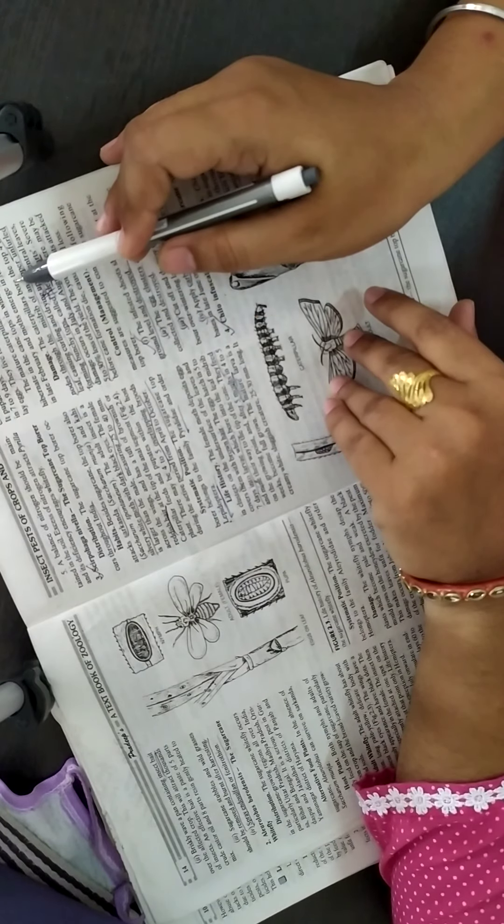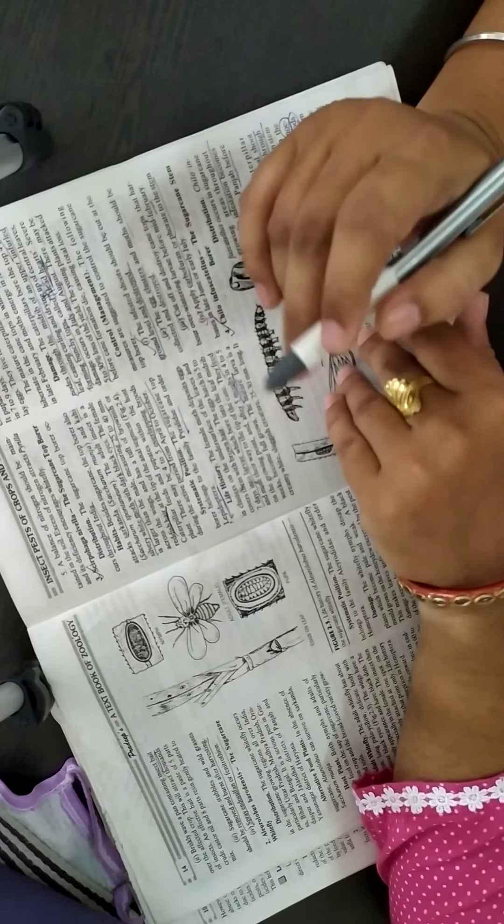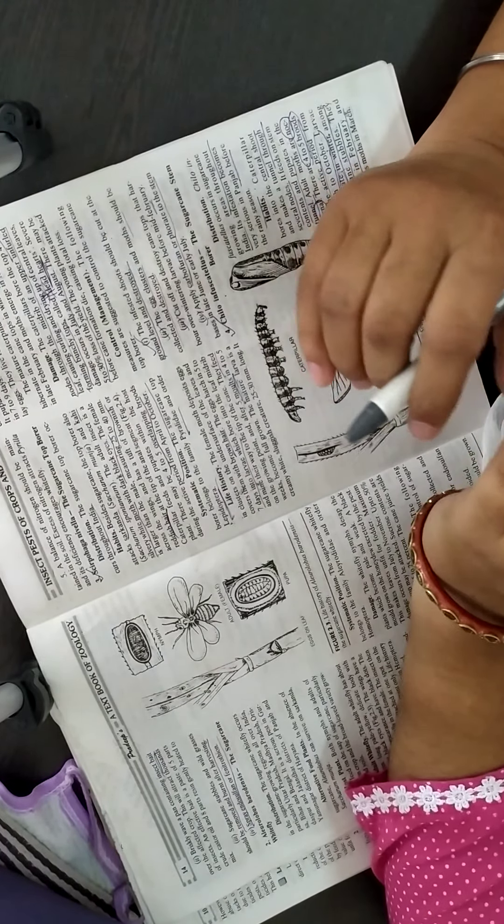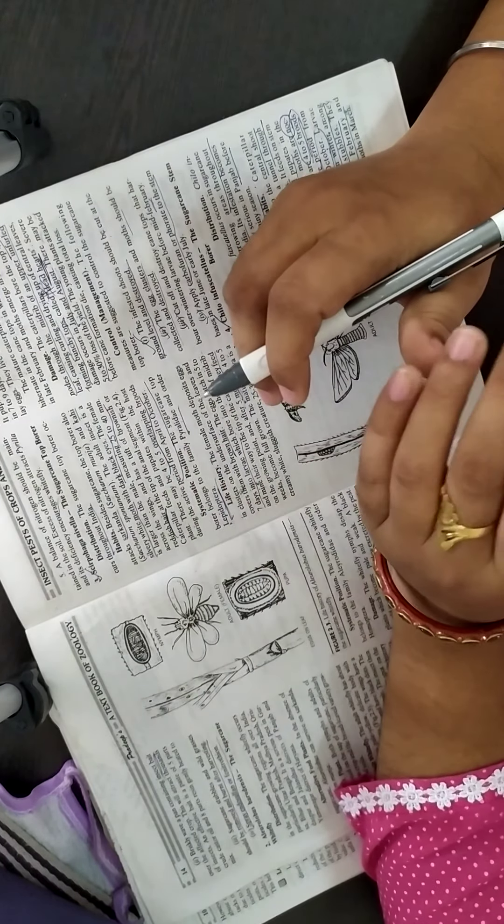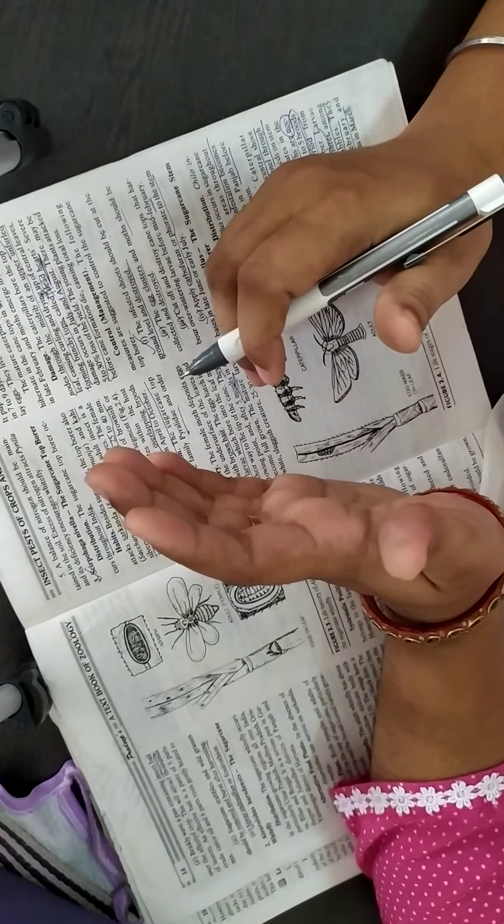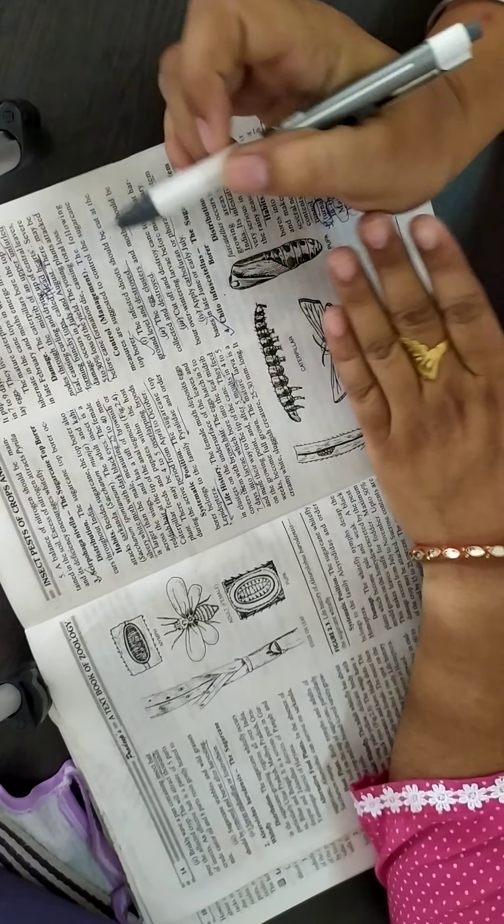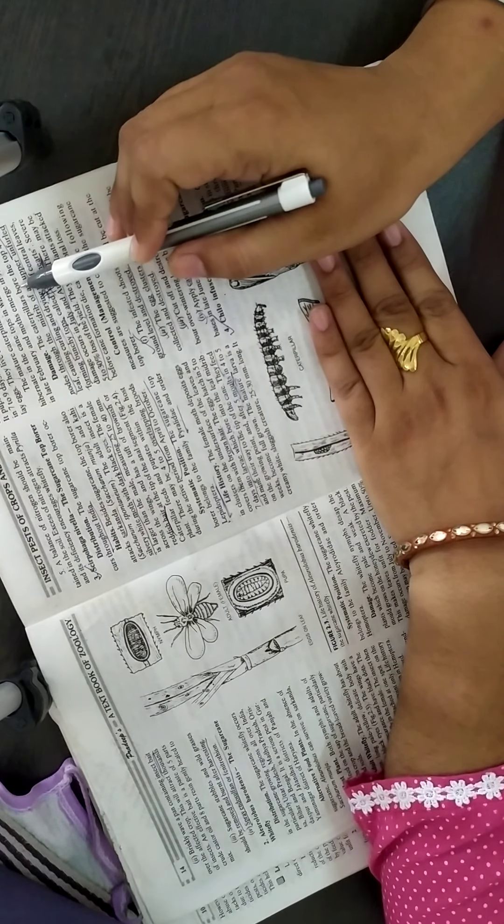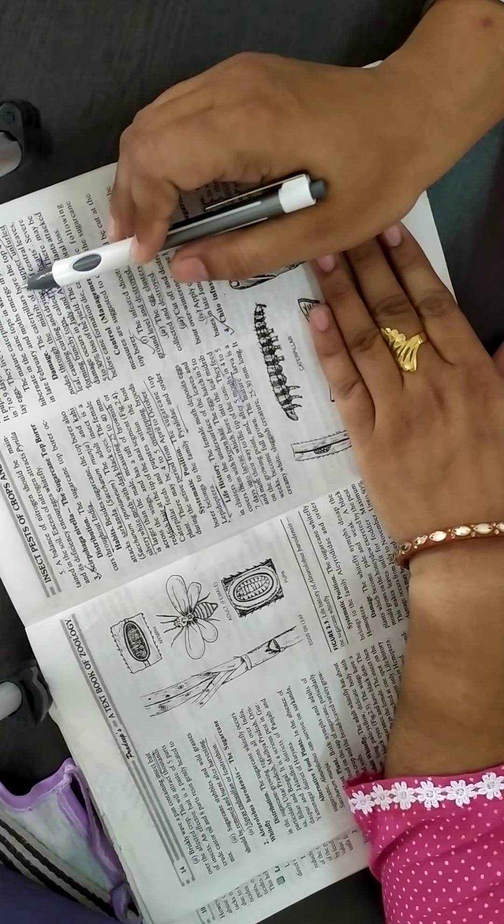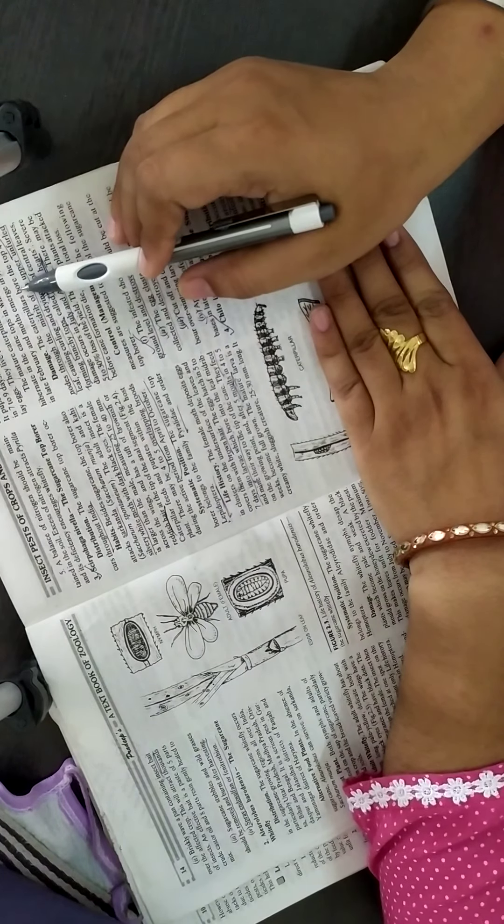Now directly comes to the damage of this pest. If we talk about their damage, first we study how they infest the sugarcane. The caterpillar is a feeding stage and very active stage of this pest.